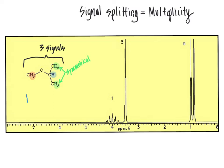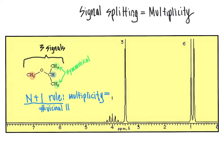The N plus 1 rule indicates that the multiplicity — the number of subpeaks for a particular signal — is equal to the number of vicinal hydrogens plus 1. In that N plus 1 rule, N is equal to the number of vicinal hydrogens, where vicinal hydrogens are defined as the hydrogens on an adjacent carbon atom.